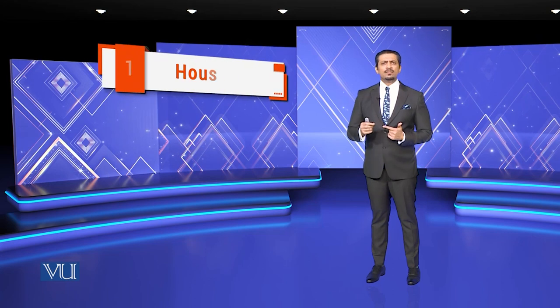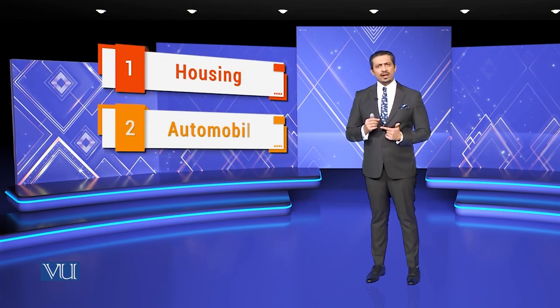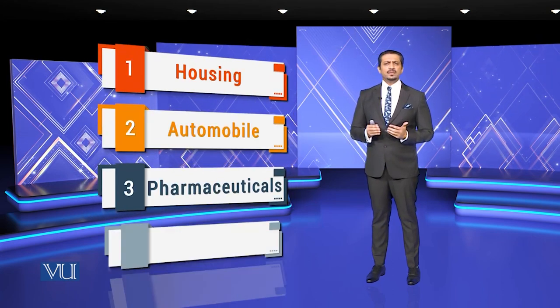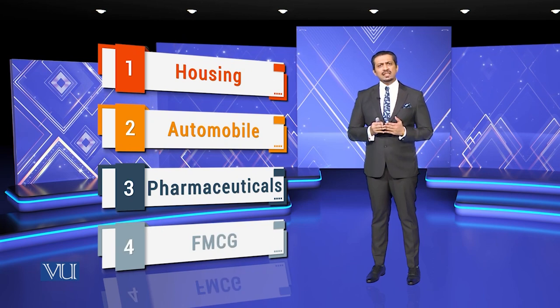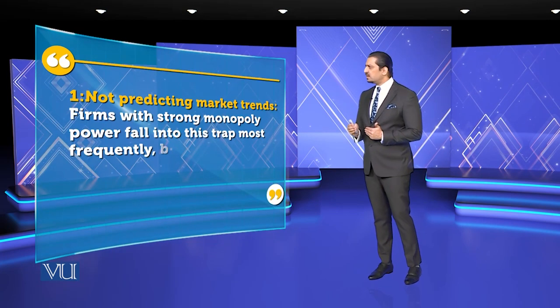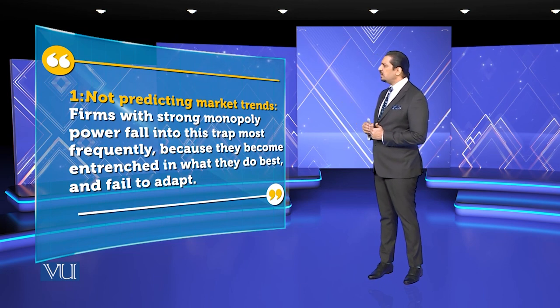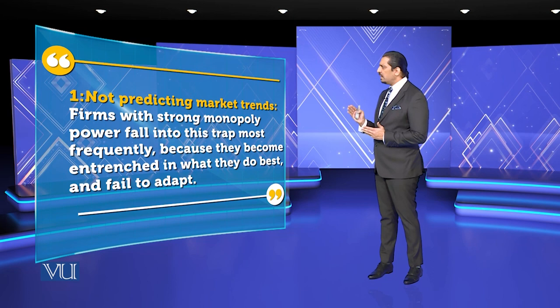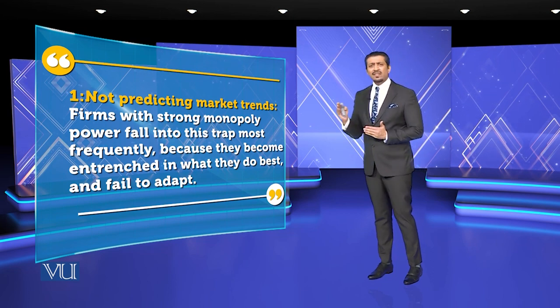So this is a concept of market — it's a market that has been changed in every area, like housing, automobile, pharmaceutical, and FMCG. So there are many areas in the market. We have seen the four factors: non-predicting trends — firms with strong monopoly power fall into this trap most frequently because they become entrenched in what they do best and fail to adapt. So they must adapt.